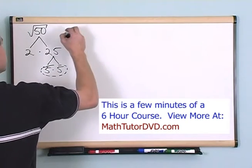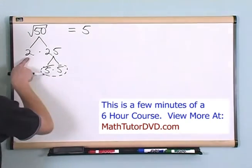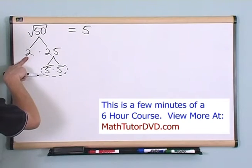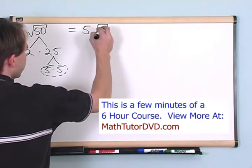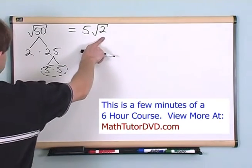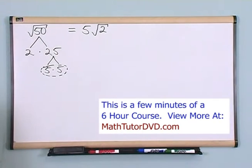So I pull it out of the radical, 5, but this 2 is left all by himself. You can't get rid of him, you can't ignore him, so you just put him right back under. 5 times the square root of 2 is exactly the same number as the square root of 50.